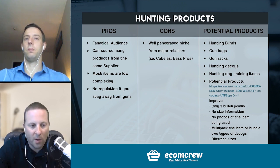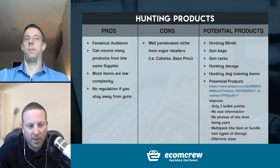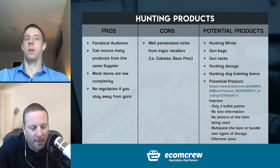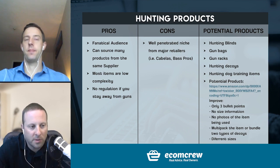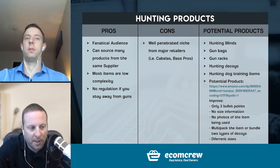We put these in order of the easiest niches to get into versus the ones that are a little more difficult. The first one we come up with is hunting products. This is a great niche because it's very broad — there are lots of different products in there. First of all, people are fanatical about it. We've talked throughout this process about wanting something people are really passionate about, and I think that's a huge pro.